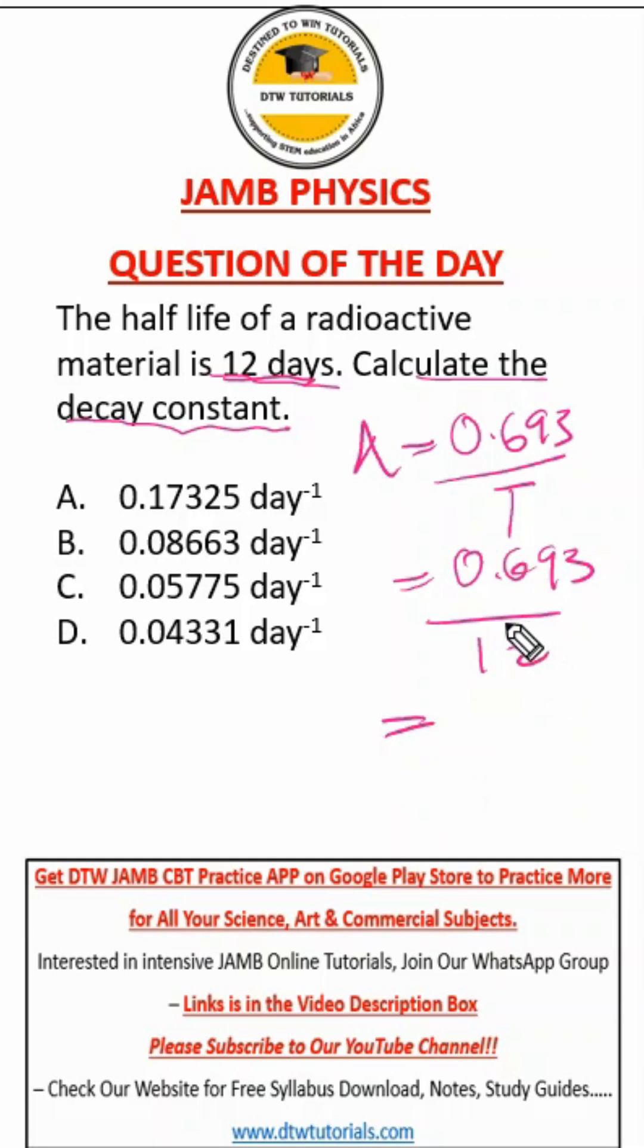You can easily use your calculator during your JAMB exam. Just at the top bar you see calculator, click on it and quickly do this. You're going to get 0.05775, and our right option here is option C.